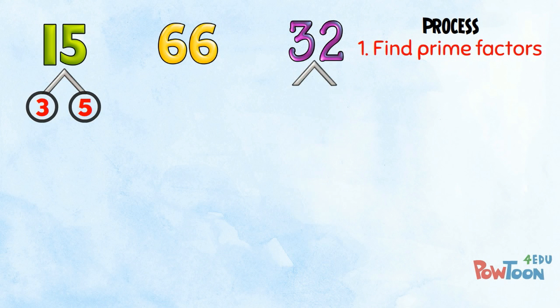32 is from 4 times 8. 4 is from 2 times 2. 8 is from 2 times 4. And 4 is from 2 times 2. All are primes.